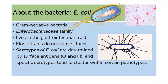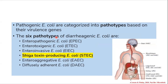E. coli is a gram-negative bacteria of the Enterobacteriaceae family. They usually live in the gastrointestinal tract and most strains do not cause illness. They are divided into various serotypes based on surface antigens like the flagellar H antigen and the O antigen. Similarly, they are divided into various pathotypes based on virulence genes. E. coli can cause infection anywhere in the body, including meningitis, bloodstream infection, urinary infection, and gastrointestinal infection.